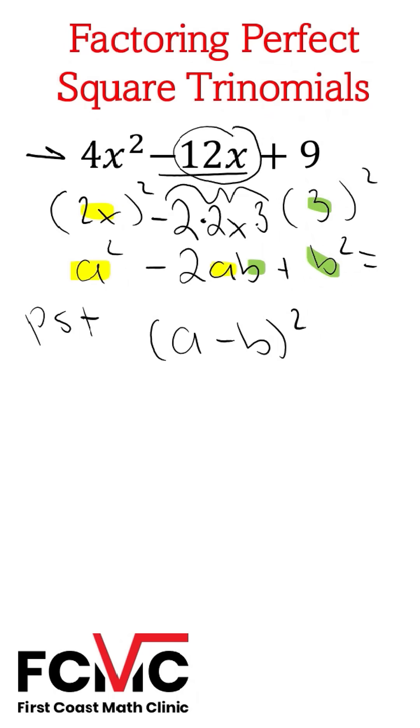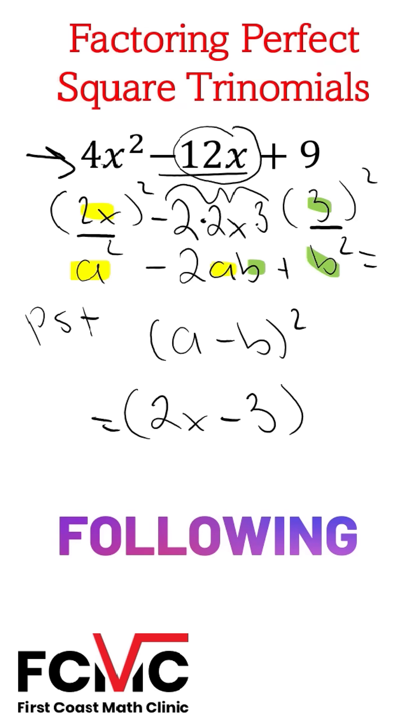So we can rewrite our trinomial here. 4x squared minus 12x plus 9 as a minus b squared. Our value for a, that's 2x, minus our value for b, which is 3. So our trinomial 4x squared minus 12x plus 9 is equal to 2x minus 3 squared.